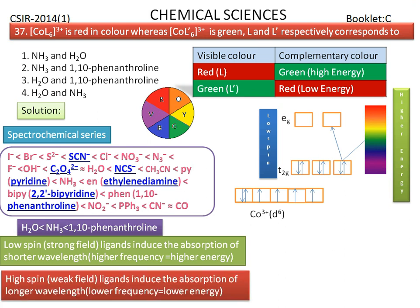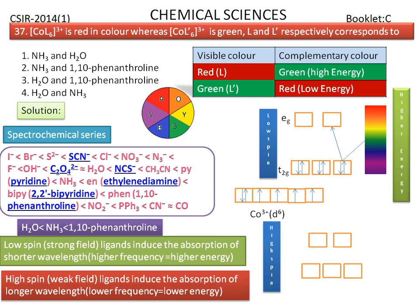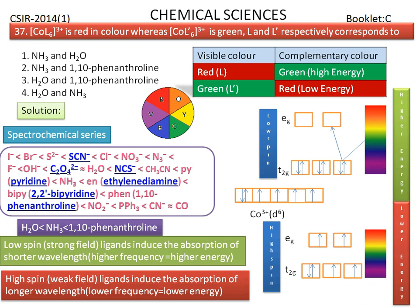Weak field (high spin) ligands induce absorption of longer wavelengths, i.e., lower energy. In the presence of weak field ligands, the CFSE is lower. Electrons are occupied according to the Aufbau principle, and the complex absorbs red wavelength, with electrons transitioning from t2g to eg orbitals.